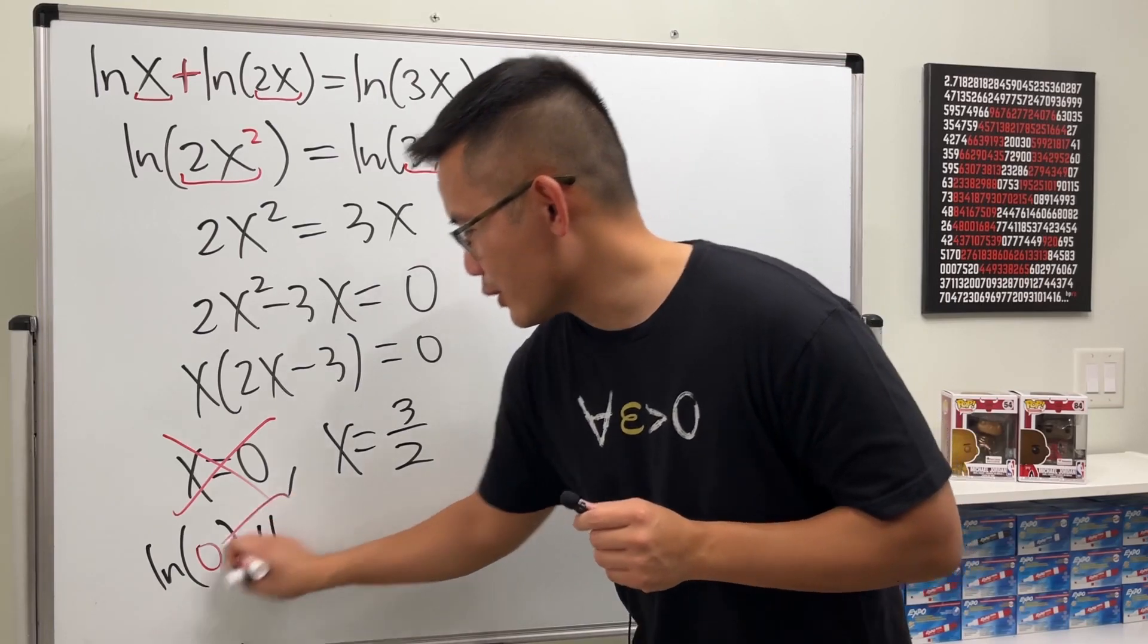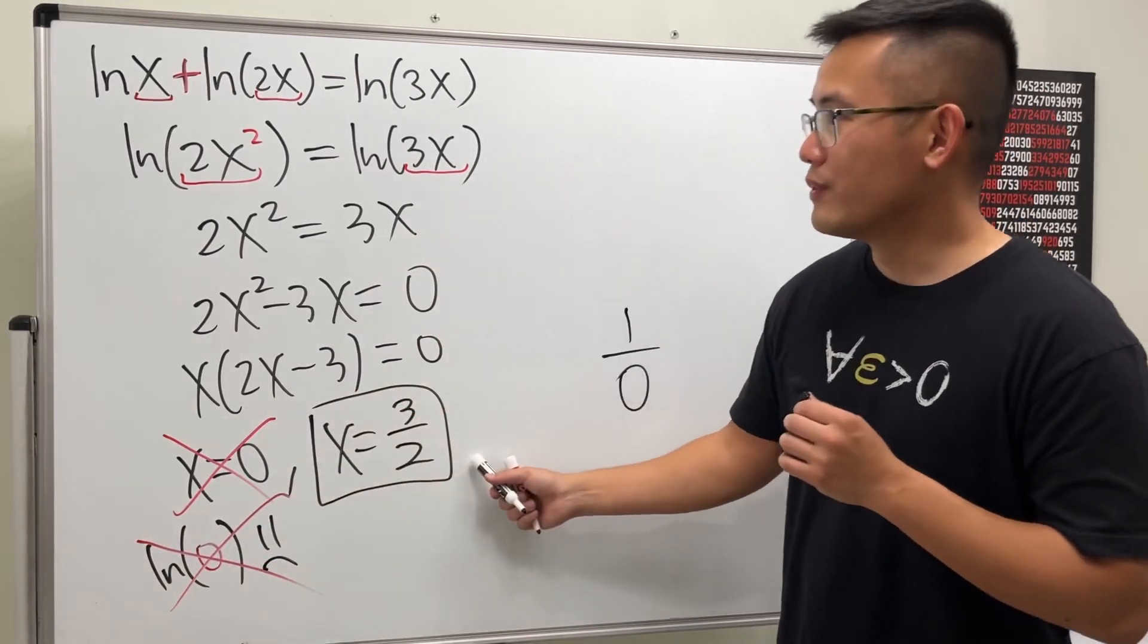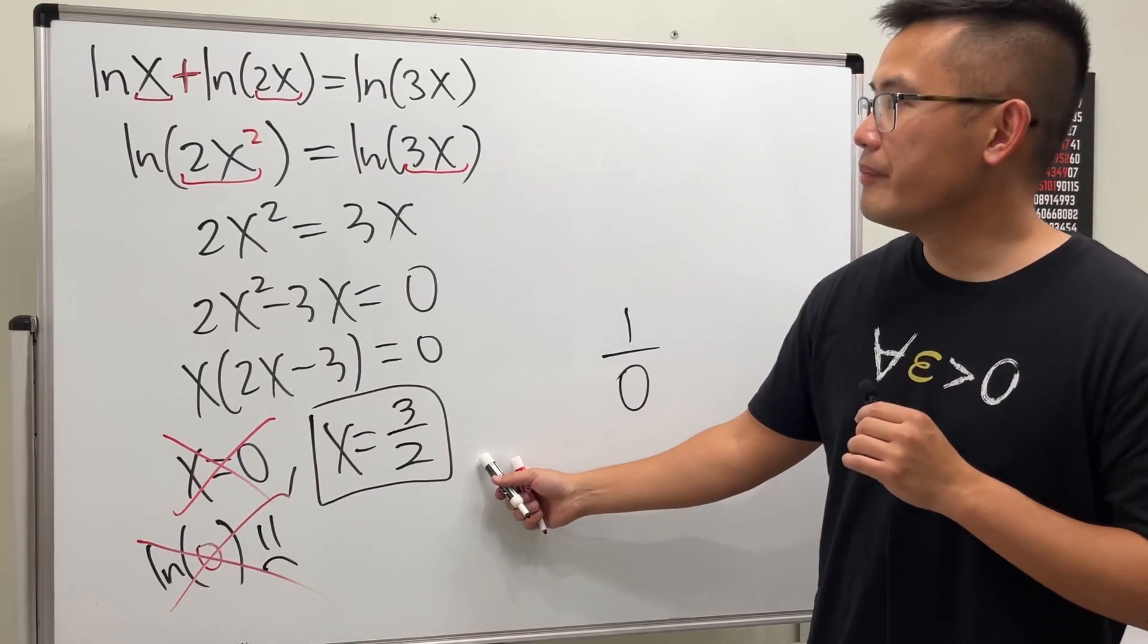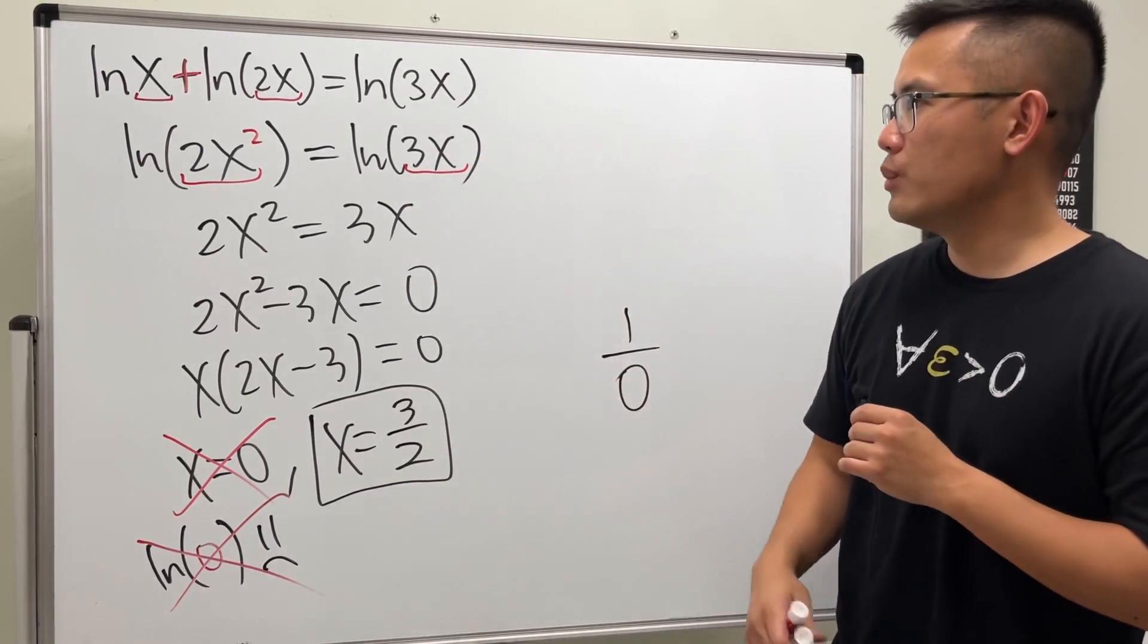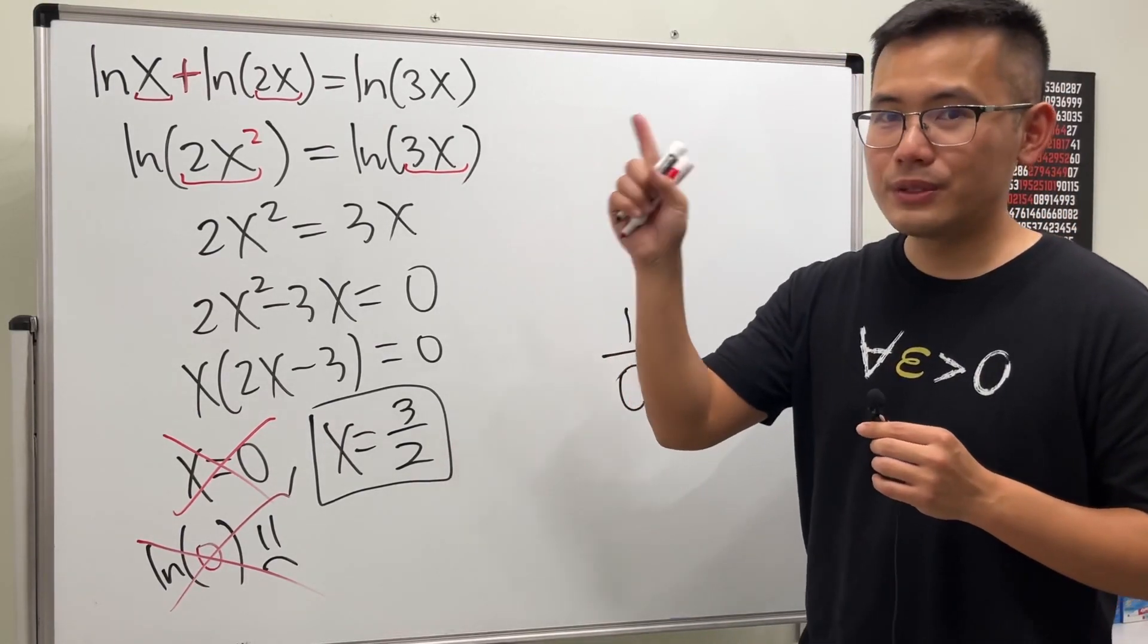So right here I'm just going to put down a little sad face and then cross it out, I guess. But anyway, x = 3/2—that's the only answer. You guys can put it back and then work it out and verify on your own. Check out my other videos for other questions.